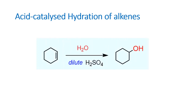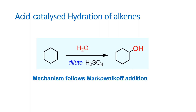An acid catalyzed hydration of alkene follows Markovnikov addition. The negative part of the addendum adds to the carbon atom that has the least number of hydrogen atoms. Across the double bond, both carbon atoms of the double bond are symmetrical, so it is immaterial on which side the OH group goes. We must remember this addition reaction happens according to Markovnikov addition, and acid catalyzed hydration happens only in the presence of dilute sulfuric acid, not concentrated sulfuric acid.